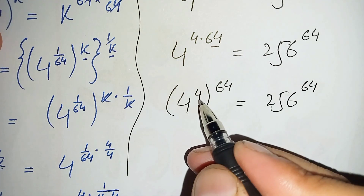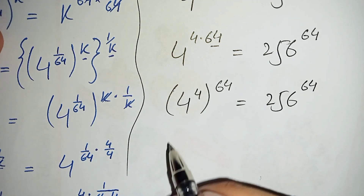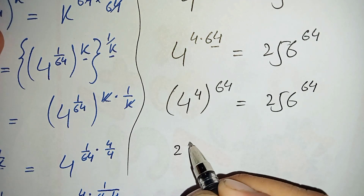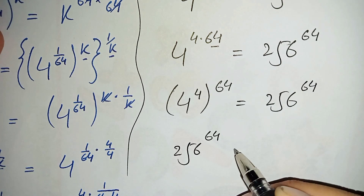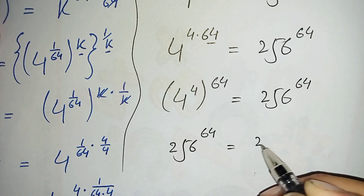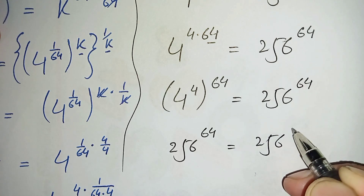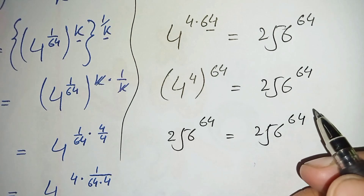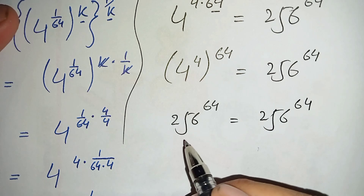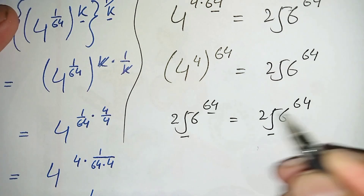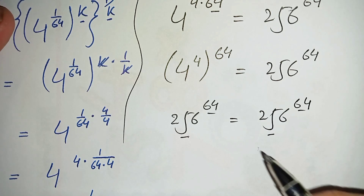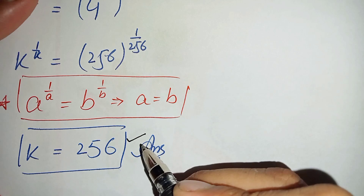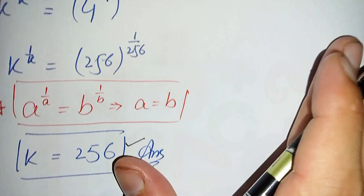The value of 4 raised to power 4 is 256, so the left hand side becomes 256 raised to power 64, which equals 256 raised to power 64 on the right hand side. Both sides are identical, confirming that k equals 256 is the exact and correct value of k in this exponential math problem.